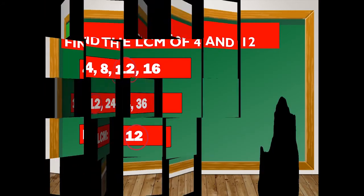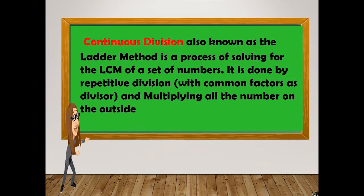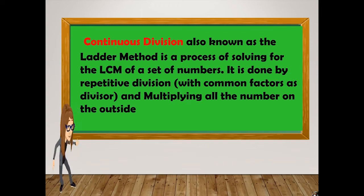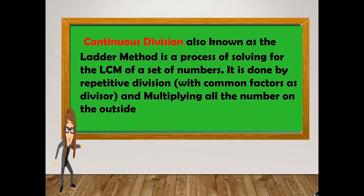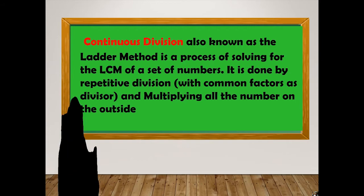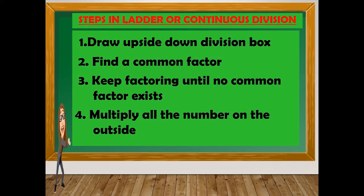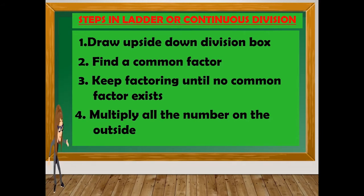Now let's go to the continuous division, also known as the ladder method. It's a process of solving for the LCM of a set of numbers, done by repetitive division with common factors as the divisor, then multiplying all the numbers on the outside. Steps: first, draw an upside-down division box. Second, find the common factors. Third, keep factoring until no common factor exists.